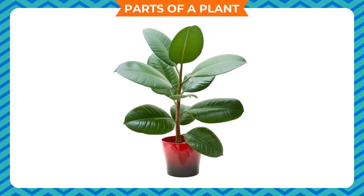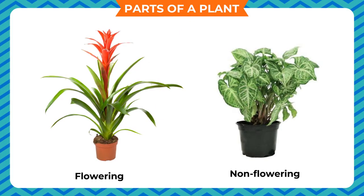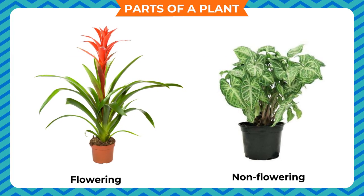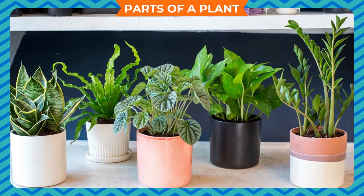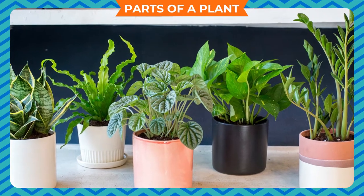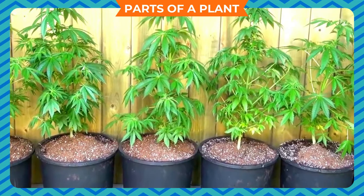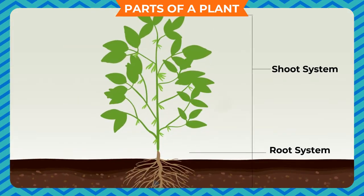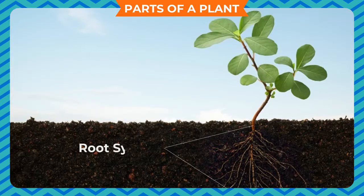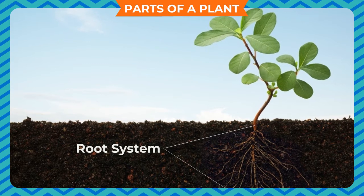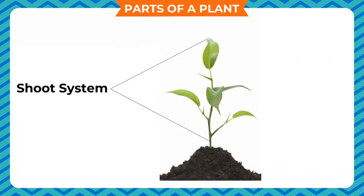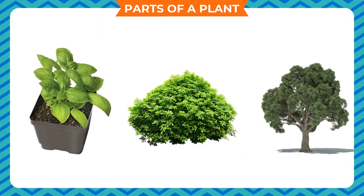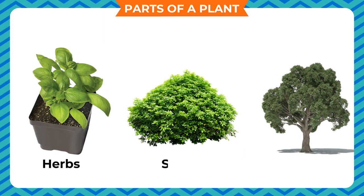Both flowering and non-flowering plants consist of different parts that function continuously to keep the plant alive. Plants are mainly divided into two parts: the root system and the shoot system. The root system lies under the soil, and the shoot system is the portion of the plant above the soil.